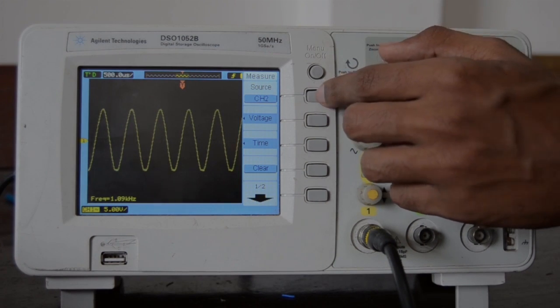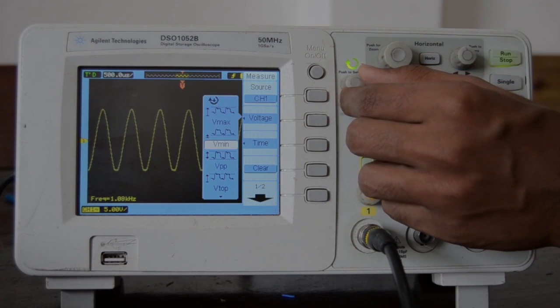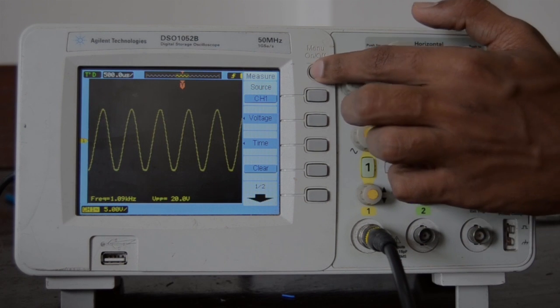The circuit was designed for 1 kHz, and the obtained frequency is 1.09 kHz. The obtained amplitude, peak-to-peak amplitude, is 20 V.